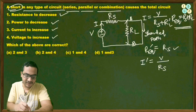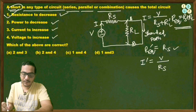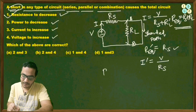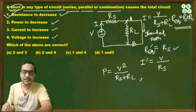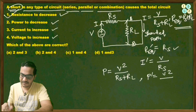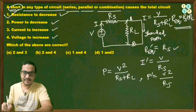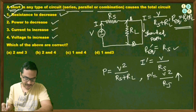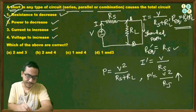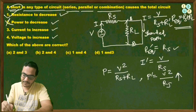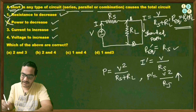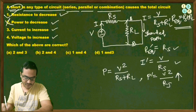Checking power: initially P = V²/(Rs + RL). After short circuit, P' = V²/Rs. Since Rs < Rs + RL, power increases after short circuit. The statement saying power decreases is therefore wrong. Checking current: before short circuit i = V/(Rs + RL); after short circuit i' = V/Rs. The current increases — so that statement is true.